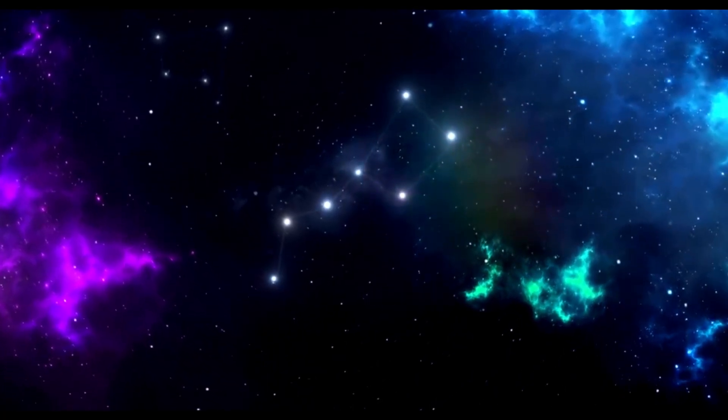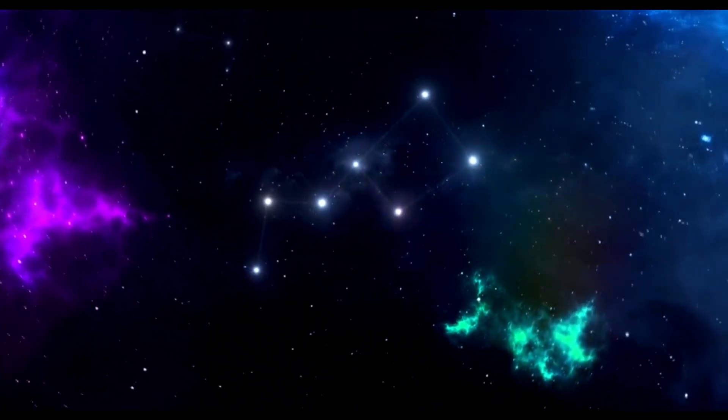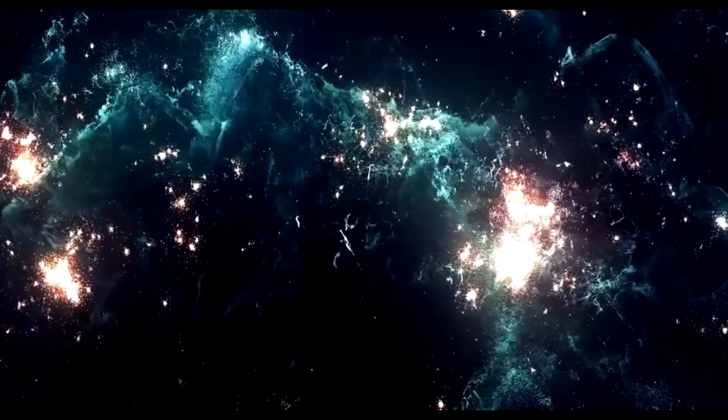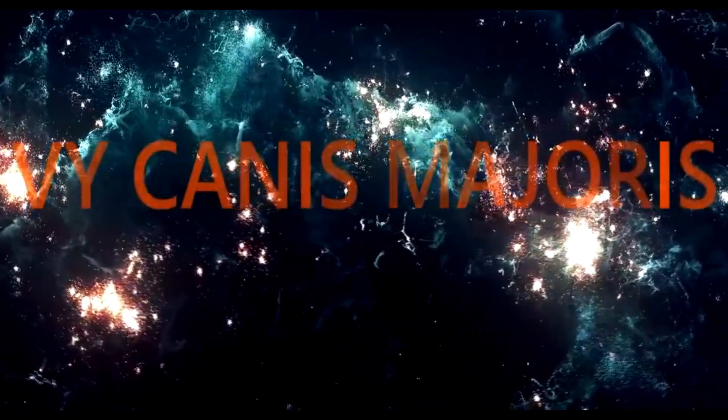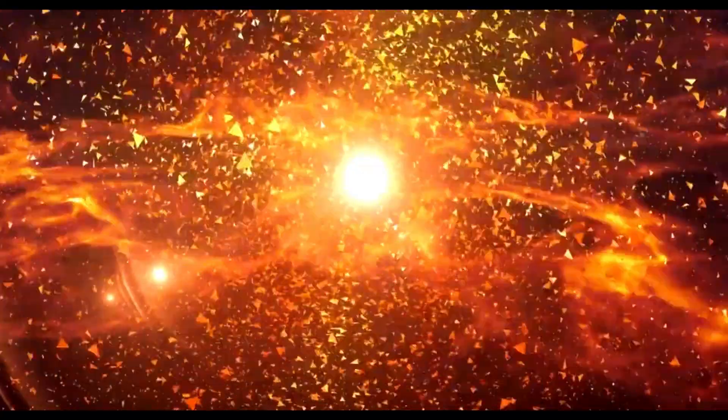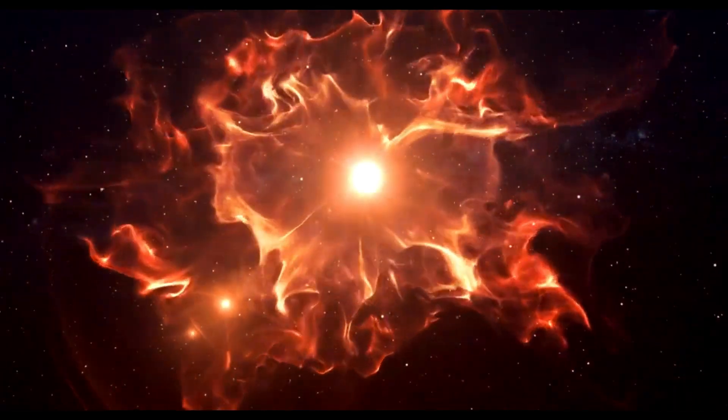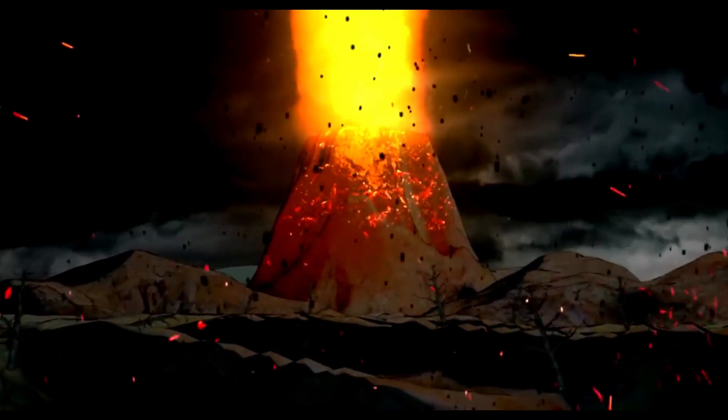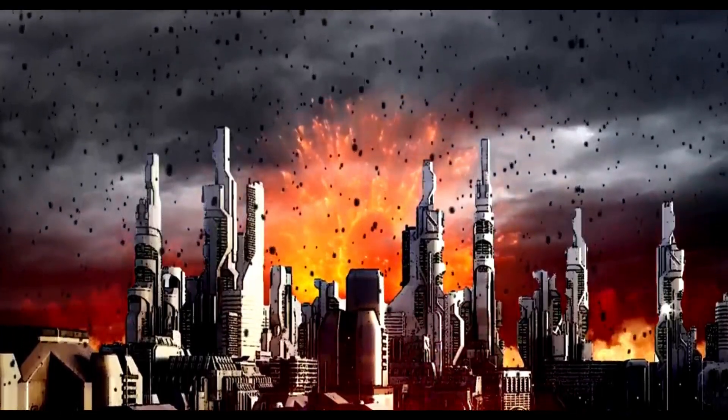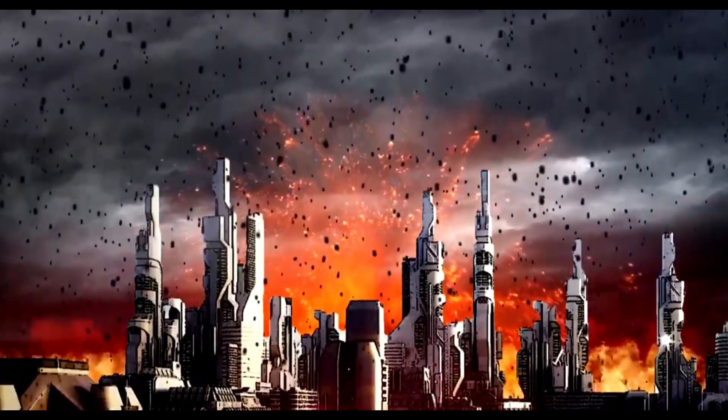100,000 years in the future, many of the constellations we know will become unrecognizable because of the natural movement of stars. At nearly the same time, V Canis Majoris, another superbright star, will explode in a hypernova, a much more powerful version of a supernova, destroying dozens or even hundreds of nearby planets and their satellites. And Earth will celebrate this distant anniversary with a supervolcanic eruption with hot magma and volcanic ash covering thousands upon thousands of square miles of land.